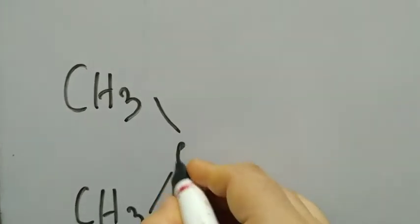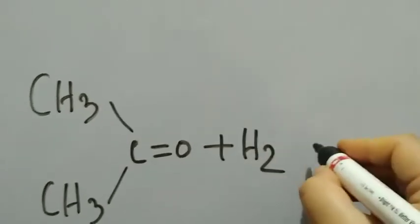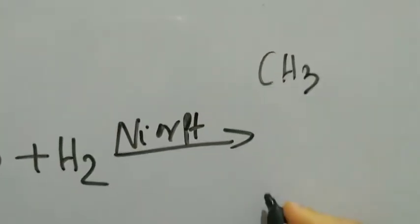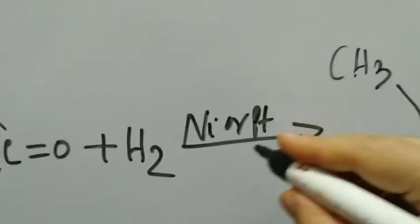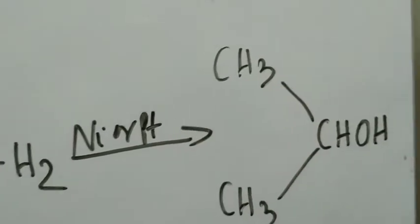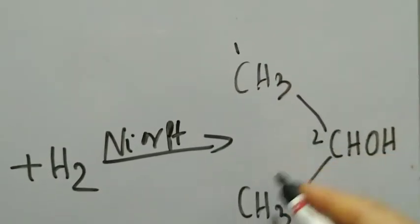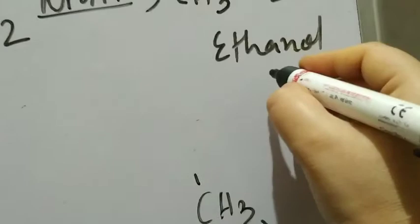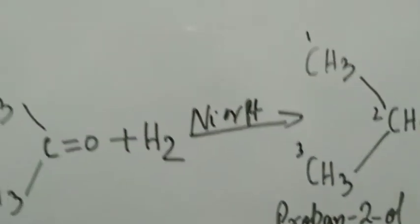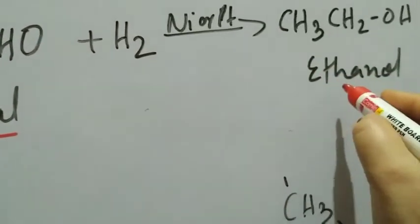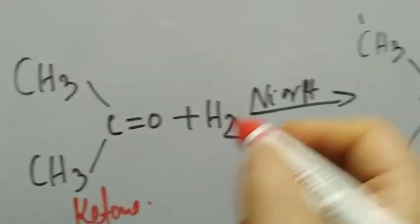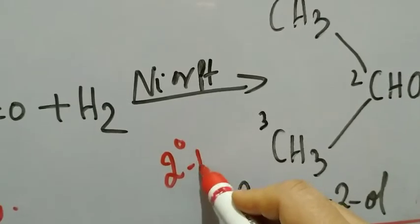Similarly, starting with the simplest ketone, acetone — CH₃COCH₃, where both R groups are the same — carrying out catalytic hydrogenation, the C=O group gets reduced to CHOH. The product is CH₃CH(OH)CH₃, which is propan-2-ol, a secondary alcohol. Two things to note: from an aldehyde you get a primary alcohol; from a ketone you get a secondary alcohol. Also, the number of carbon atoms in the product remains the same as in the reactant.